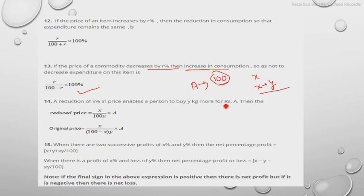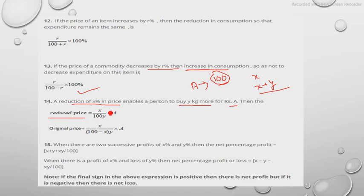Next: a reduction of x percent in price enables a person to buy y kg more for rupees A. If you have to find the reduced price, it is given by: (x / 100) × (A / y). If the question asks for the original price, it is given by: (x / (100 − x)) × (A / y). You need to remember these formulas so you can apply them directly when the question comes.